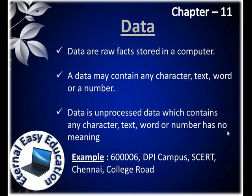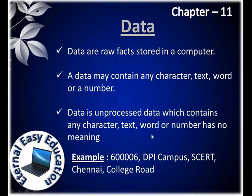Data has no meaning on its own. For example, if I read: 606, DPI Campus, SCERT, Chennai College Road — there is no meaning, because these are just data, a word and a number not organized in any manner. Data are raw facts — collections of numbers, characters, text, or words — but there would not be any meaning.